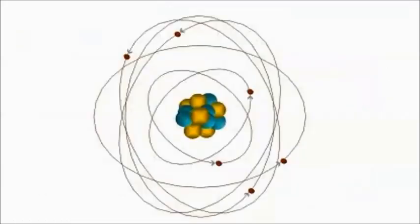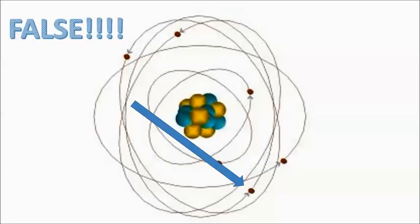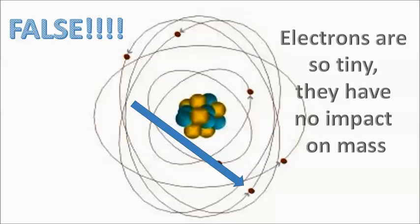So remember, we have three subatomic particles. We've already focused on two — the proton and the neutron — and we've talked about how they are really big and massive. What do you notice right away is different about this third little guy? That's right, he's so little. This little bitty thing is called the electron. So far, we know electrons are super small. True or false: if we added a bunch of electrons to this atom, is it going to make it a lot more massive? It is absolutely false — the electron is so small, it doesn't even matter how many there are. It's not going to have an impact on the mass of that atom.